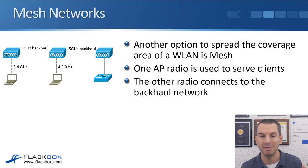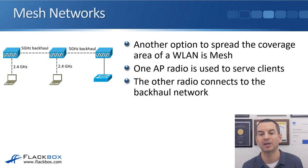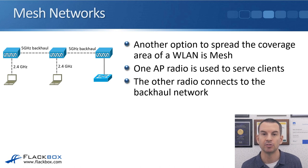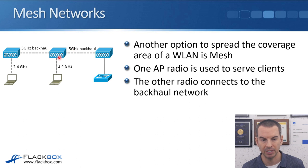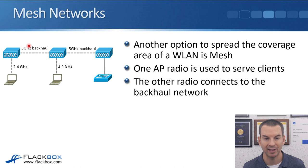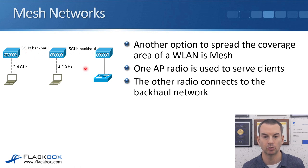Mesh networks are becoming very popular in home networks and are another option to spread the coverage area of a wireless LAN. One AP radio serves clients while the other radio connects to the backhaul network. For example, a main switch connects to one AP, which then has a backhaul on the 5 GHz radio to another AP, and then another backhaul to a further AP. This extends the coverage area, giving a large wireless footprint while remaining connected to the wired network.